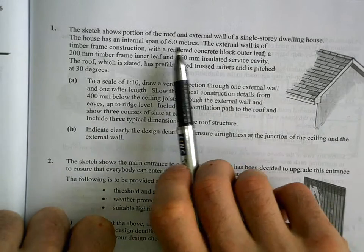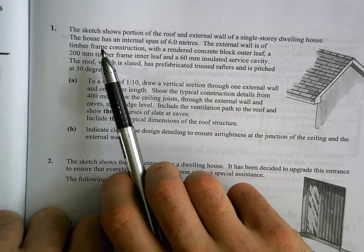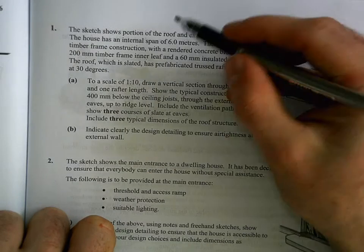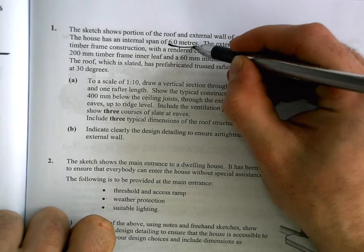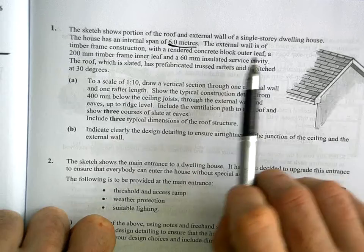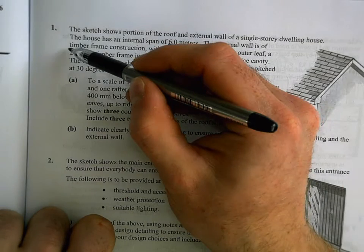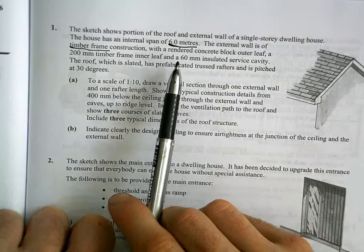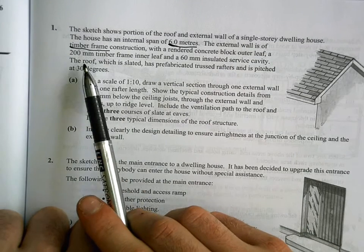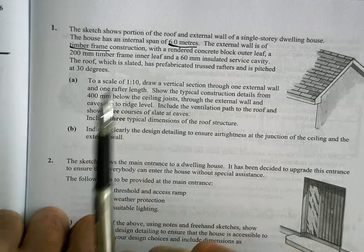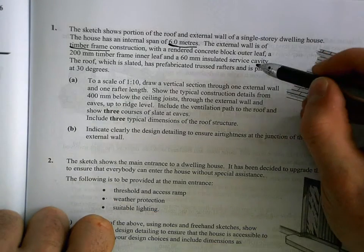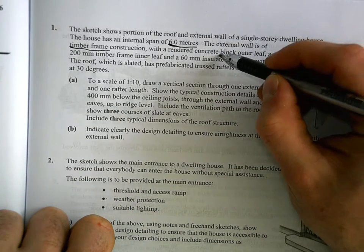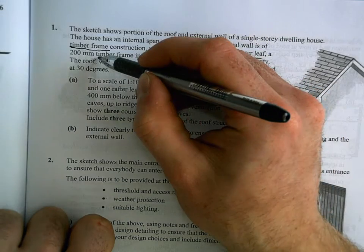The house has an internal span of six meters. The external wall is timber frame, very important that we don't draw a block wall for that. We have a block outer leaf and the 200 millimeter timber frame inner leaf with 60 mil insulated service cavity. So we have a block outer leaf with timber frame on the inner.